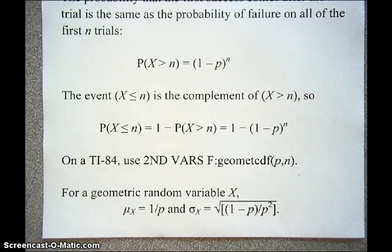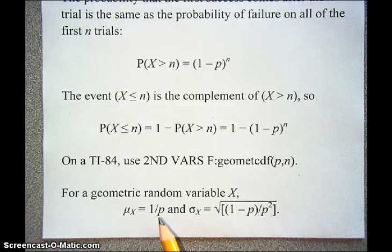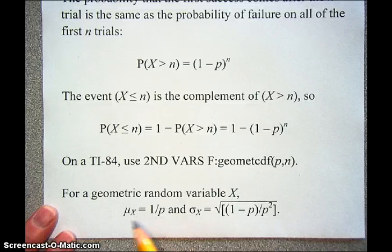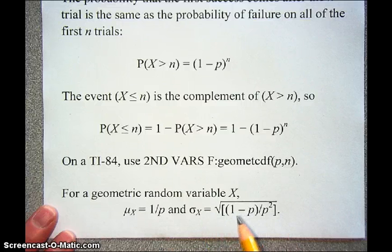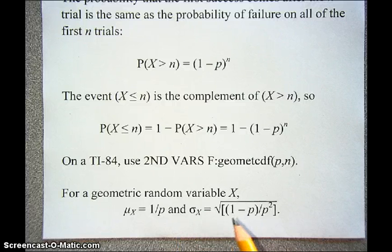Geometric random variables have means and standard deviations. The mean is 1 over P — intuitively, if you have a 20% chance of success on any trial, you'd expect about 1 over 20%, which is 5 trials, to get the first success. The standard deviation equals the square root of (1 minus P) divided by P squared. These formulas come from geometric sequences, though deriving them is beyond the scope of this video.